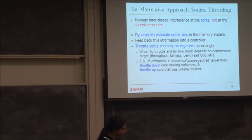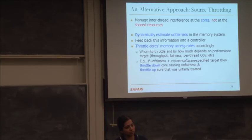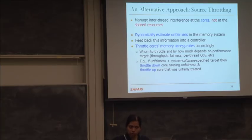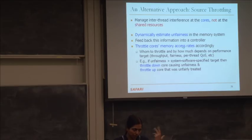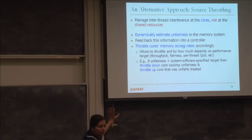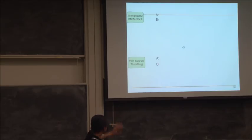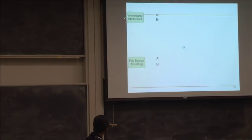FST uses source throttling: do not manage interference at the shared resource itself, but manage it at the cores. Dynamically estimate the amount of unfairness in the memory system, figure out which applications are interfering and which are being interfered with, feed this back into a centralized controller, and use that information to throttle back different cores. The decisions on whom to throttle, when, and how much depend on your optimization goal. It's a feedback loop where you get slowdown estimates from hardware and use unfairness estimates to throttle some applications and throttle up others.